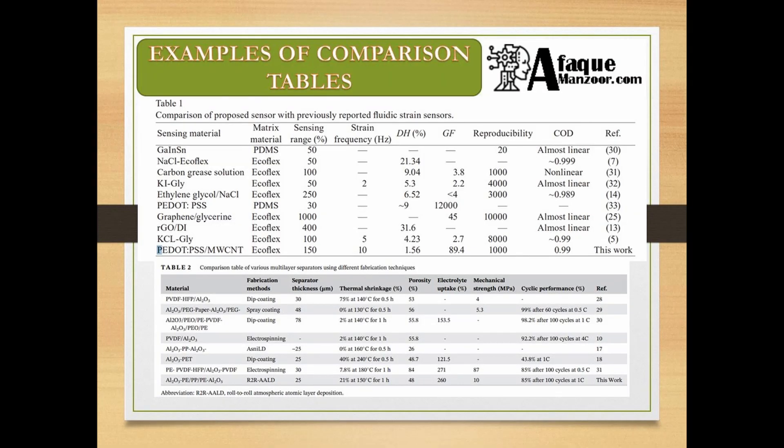There is a lot of quantitative information or features of your device which can be compared with those of many other sensors proposed in the last few years. Obviously, hundreds of sensors have already been developed, but you cannot compare with all of them. You can specifically select a few recently published papers and make a comparison table. It's not necessary that all features of your sensor are better than other researchers' — some of those parameters would be better than previously published data.